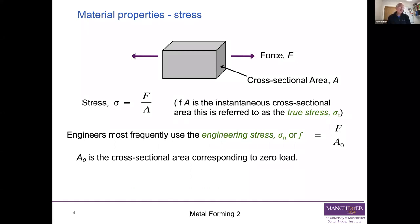If we want something simpler, we use the engineering stress, which is the load over the original cross-sectional area A₀ — the original cross-sectional area at zero load. Because metals change their shape and volume during loading, the true stress and the engineering stress are not always the same. At small loads and small strains they're very close, but in general terms they're not quite the same.